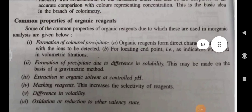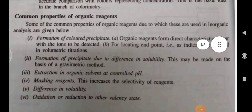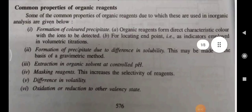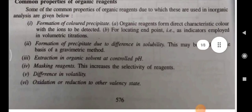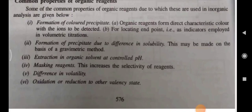Common properties of organic reagents: Formation of colored precipitate — organic reagents form direct characteristic color with the ions to be detected, and are used for locating endpoints such as indicators employed in volumetric titration. Formation of precipitate due to difference in solubility — this may be used on the basis of the gravimetric method.